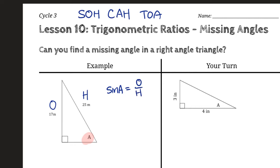So now, all we need to do is plug in what we know. This time, we don't know the angle, so we're going to leave it as sine A. But we know the opposite. The opposite is 17. And the hypotenuse is 25. So sine A is 17 over 25.